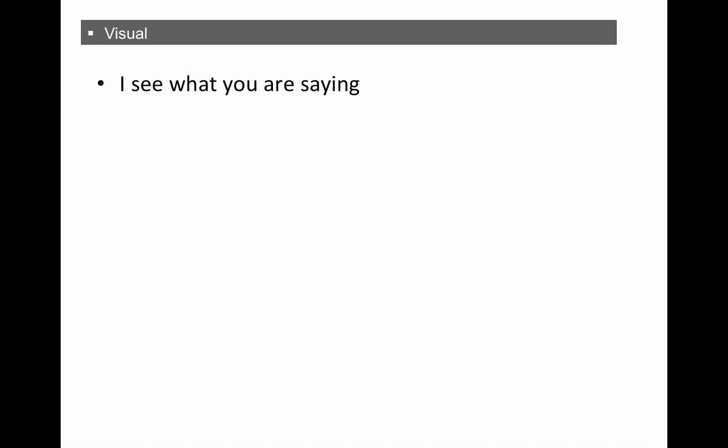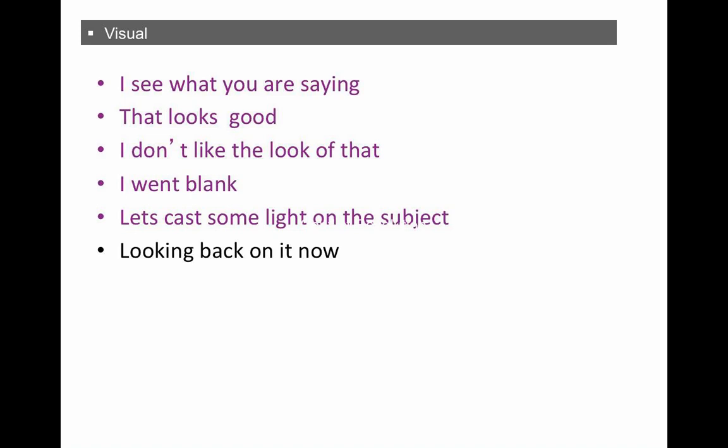So some comments that might give you an indication of how your source processes the information is how they comment on how the information comes to them. So 'I see what you're saying' is one way that people say, and it's an indication of how they're taking the information visually. 'That looks good.' 'I don't like the look of that.' So rather than saying 'I don't like that,' it's 'I don't like the look of it.' 'I went blank. My mind went blank.' 'Let's cast some light on the subject.' So these are all visual cues that you should pick up on if they use them to say that visually is how they take in information more than the other senses. 'Do you get the picture? Do you see my point of view?' So that word 'see' indicates that their prime sensory input is visual. 'Look at it like this.'